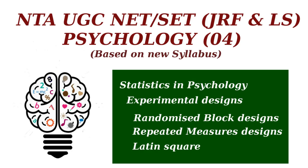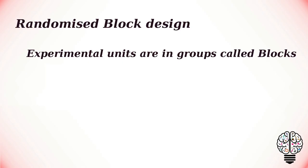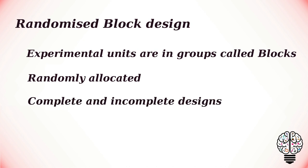Welcome to this psychology lecture series. In this video, we are going to talk about some experimental designs such as randomized block designs, repeated measures design, and Latin square designs. A randomized block design is an experimental design where the experimental units are in groups called blocks. The treatments are randomly allocated to the experimental units inside each block. When all treatments appear at least once in each block, we have a completely randomized block design.